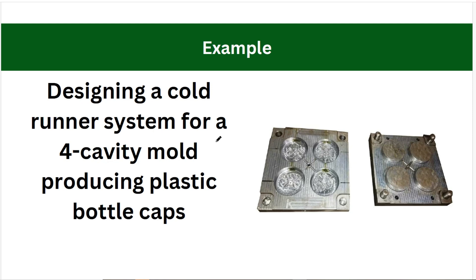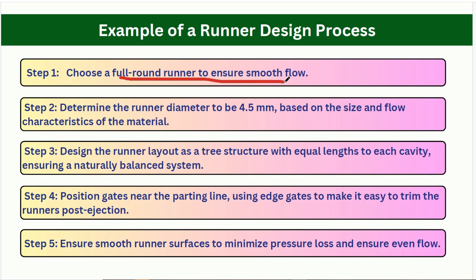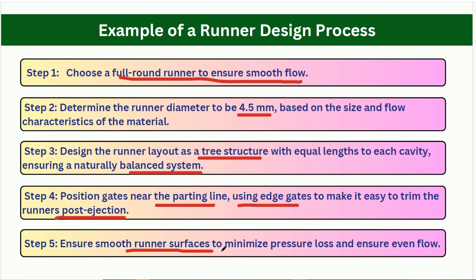Now let's look at an example of a cold runner system for a four-cavity mold producing a bottle cap. You can see the cavity and core of the mold. Step one: choose a full round runner to ensure smooth flow. Determine the runner diameter to be 4.5 mm based on the size and flow characteristics of the material. Design the runner layout as a tree structure with equal length to each cavity to ensure a natural balance system. Position the gate near the parting line using an edge gate to make it easy to trim the runner post-ejection, and ensure a smooth runner surface to minimize pressure loss and ensure even flow.